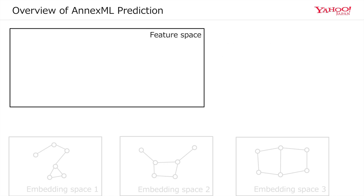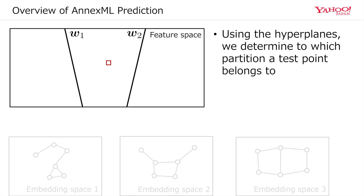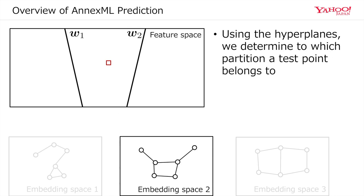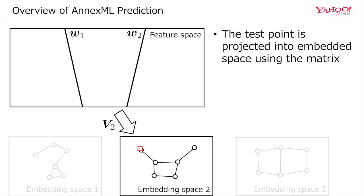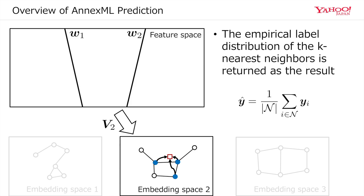We make a prediction using the k subgraphs. Using the hyperplanes, we determine to which partition a test point belongs. The test point is projected into the embedding space using the corresponding matrix. Then k-nearest neighbors in the embedding space are retrieved. The empirical label distribution of the k nearest neighbors is returned as the prediction.